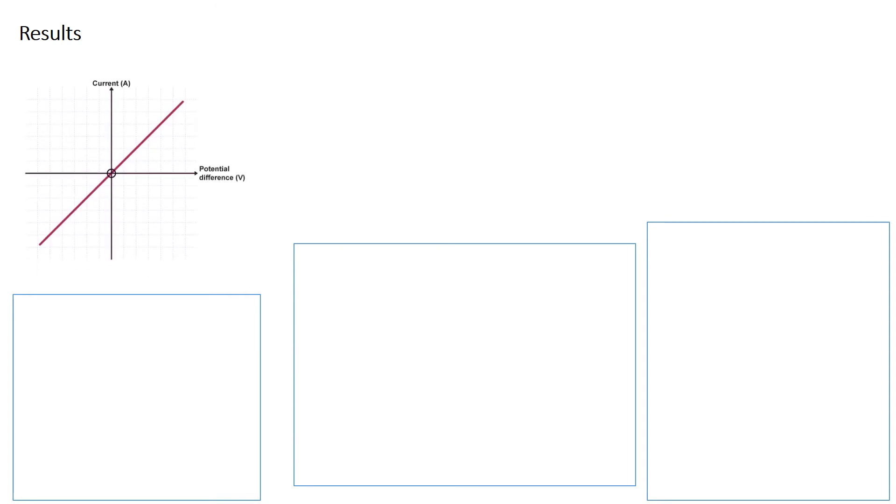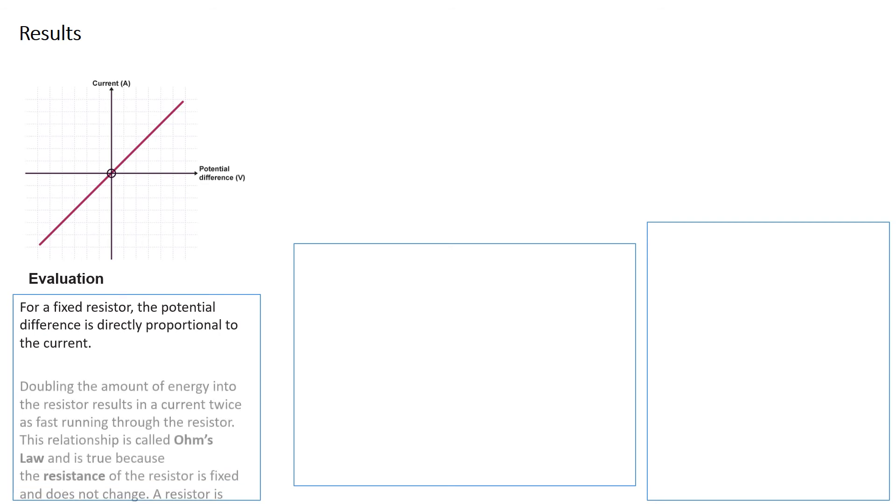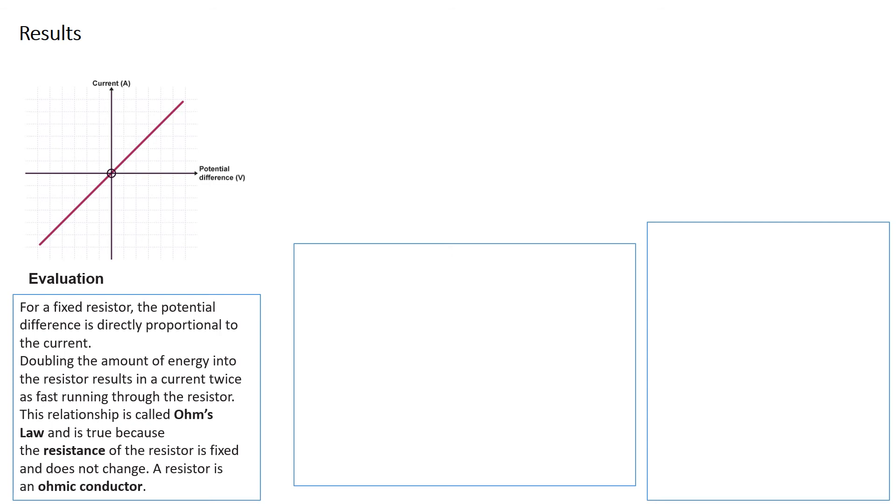Some results - you do need to be able to reproduce these graphs. The first graph is for a fixed resistor. We've got a straight line going straight through the origin. The purpose of reversing the wires on the power pack is so you can see what happens. What you see is directly proportional to current. Linking it back to Ohm's law: if you double the amount of energy into the resistor, you get current twice as fast running through the resistor. This relationship is called Ohm's law, and it's true because the resistance of the resistor is fixed and does not change. A resistor is an ohmic conductor - ohmic means it applies Ohm's law.